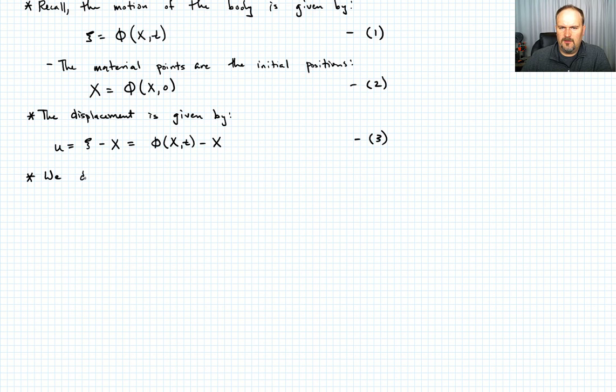So we, in 1D, we define the deformation gradient as follows. We say that is F, that's our normal variable for the deformation gradient, is equal to partial, actually it does need to be a partial in this case, since there's a time component, maybe we'll leave it there, partial of ξ with respect to X. So all that's telling me is how, what's a differential unit in the current space relative to the differential vector in the original configuration. Which I could also write as partial of φ of X and t with respect to X. Call that equation 4.